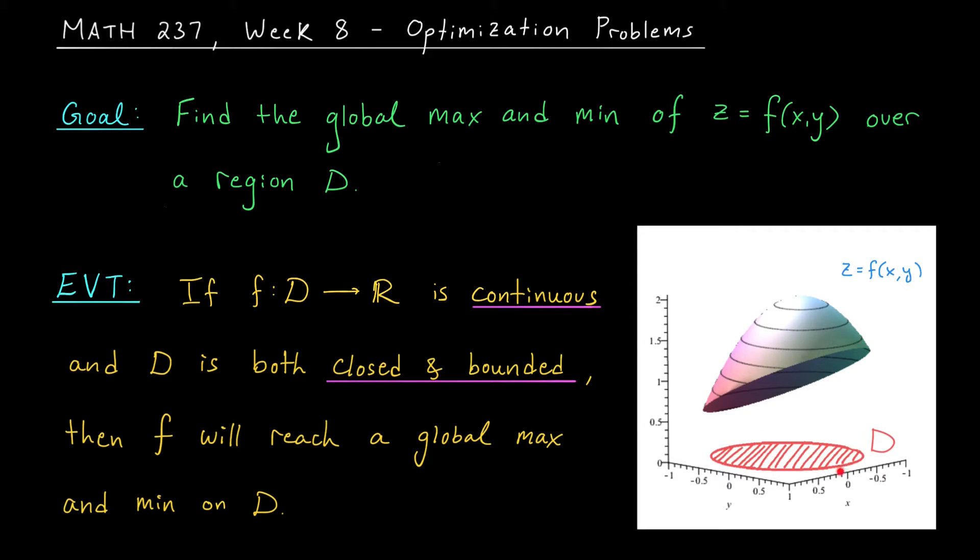over some closed and bounded region D. The global max of our function is going to occur at this point right here, which is a critical point inside our region. The global minimum occurs at this point here, which lies on the boundary of D.